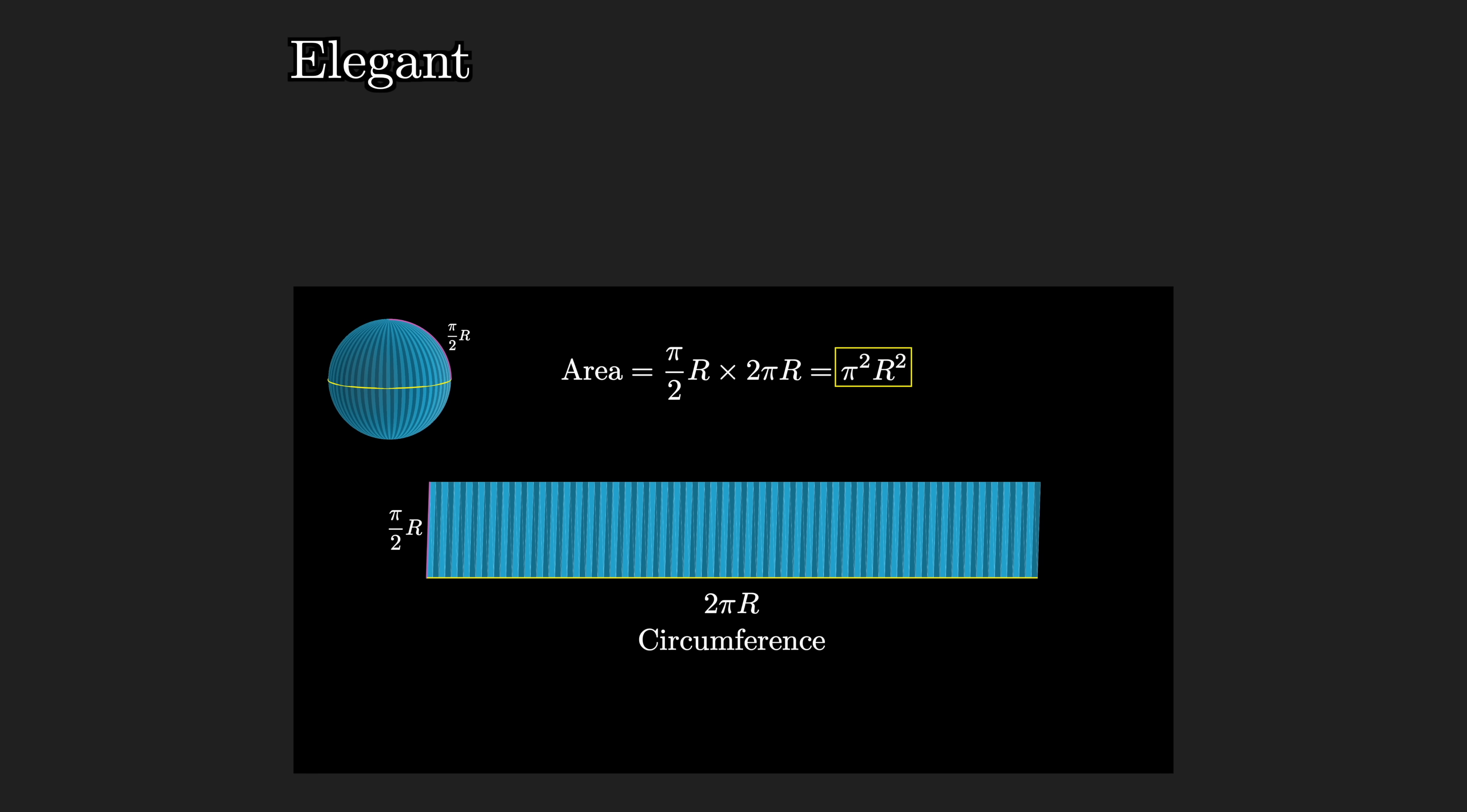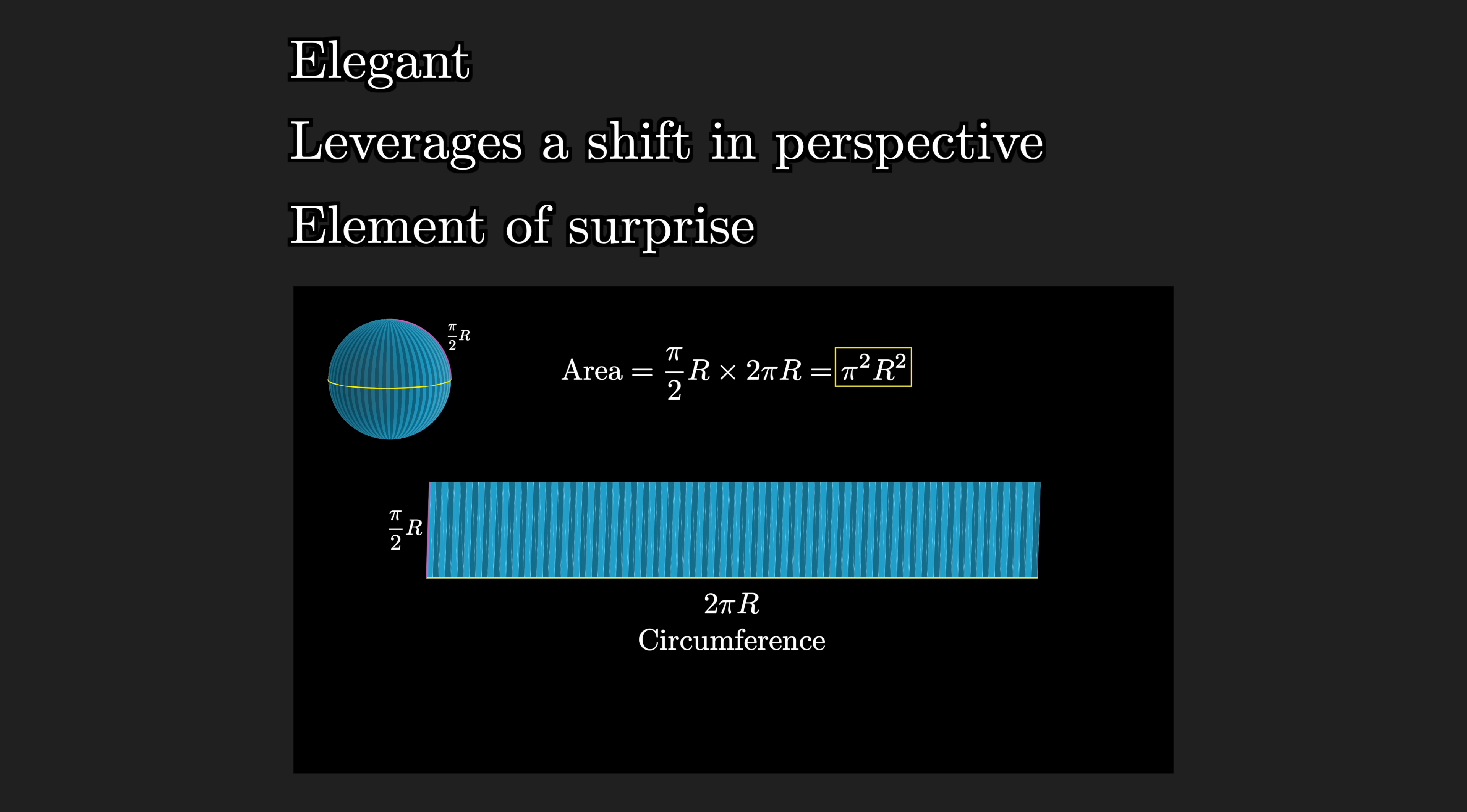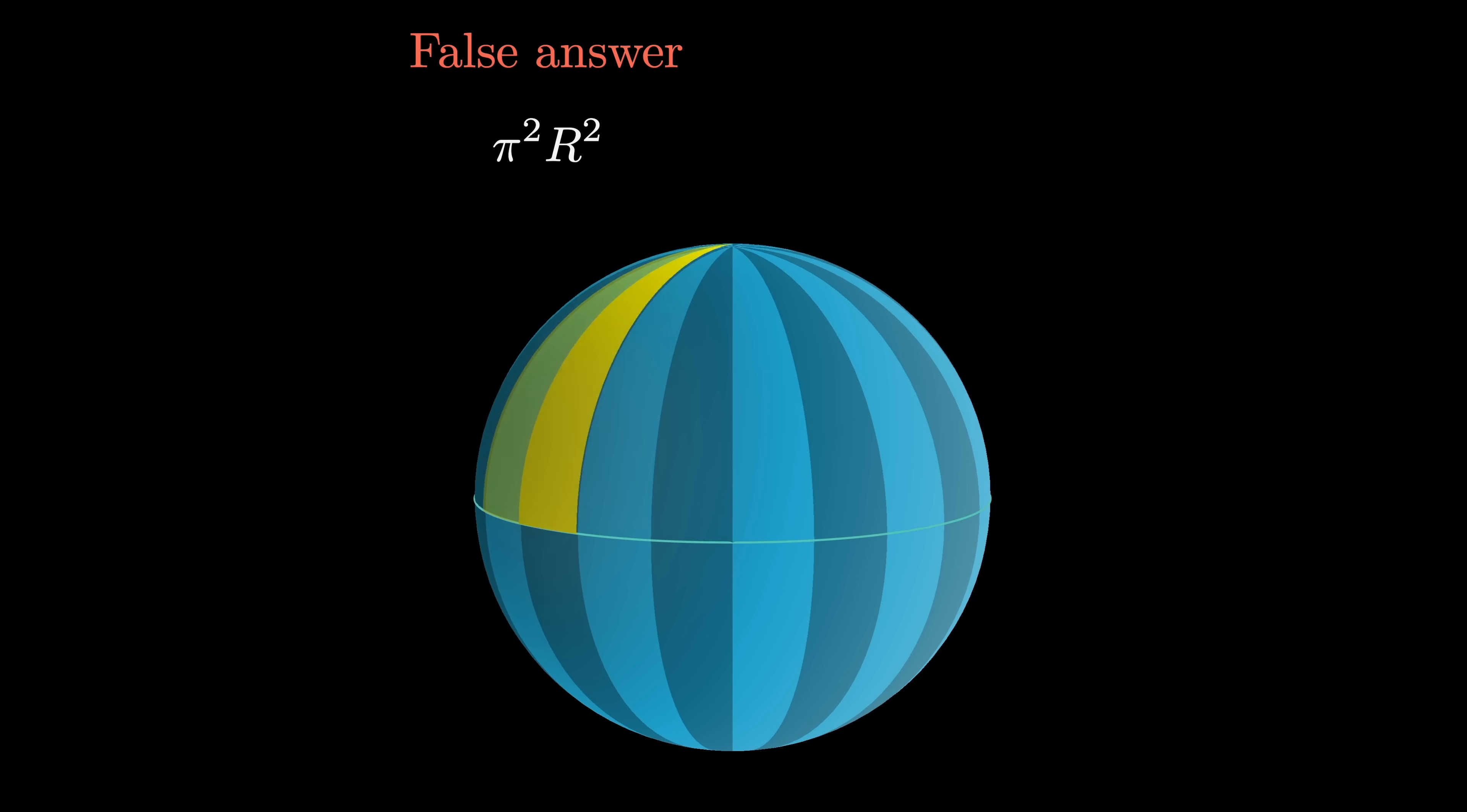The proof is elegant, it translates a hard problem into a situation that's easier to understand, it has that element of surprise while still being intuitive. It's only fault, really, is that it's completely wrong. The true surface area of a sphere is 4πr².